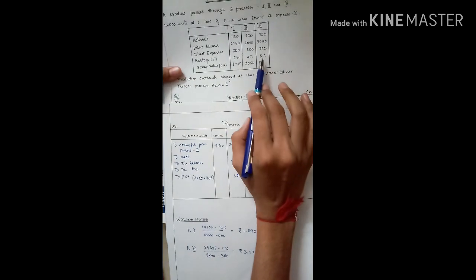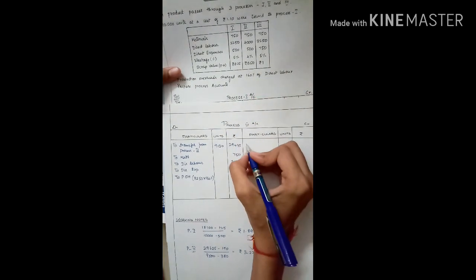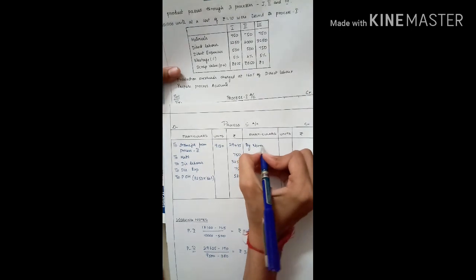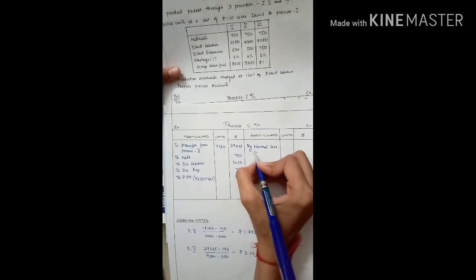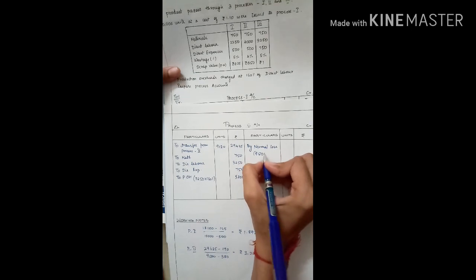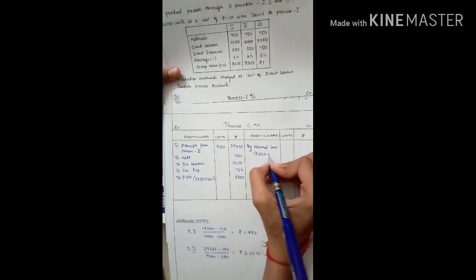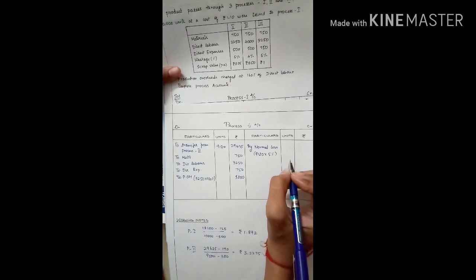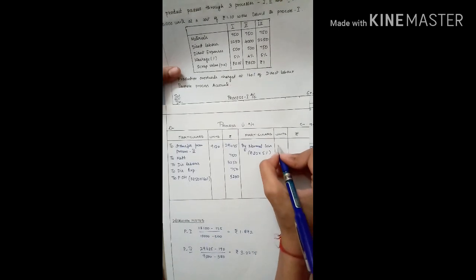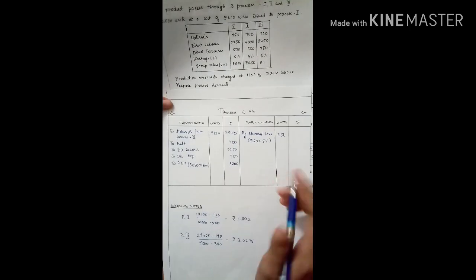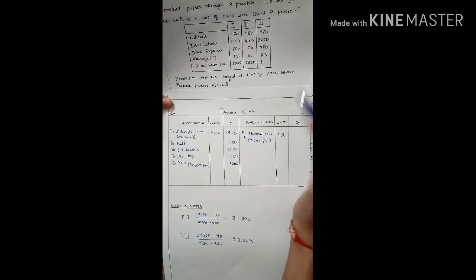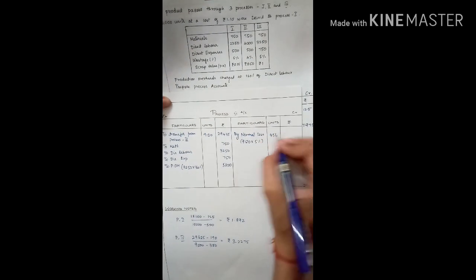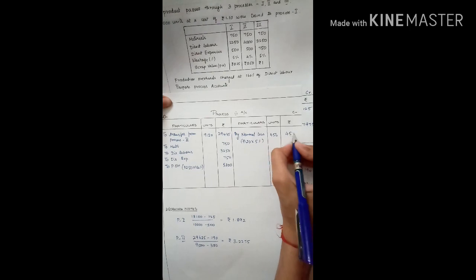We have wastage of 5% for process three — by normal loss. We calculate normal loss from the input: 5% of 9,120 comes to 456 units. The scrap value is rupees 1, so 456 units into rupees 1 gives a normal loss value of 456.